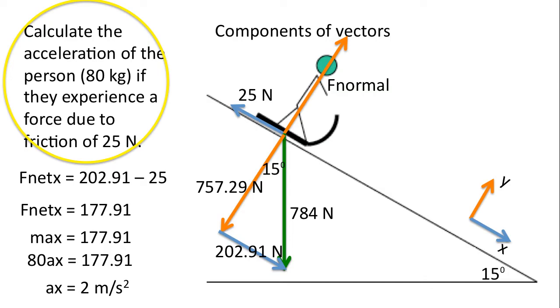With significant digits, it would only be 2, since 80 kilograms only has one significant digit. Please note in the diagram the length of the vectors. If we were to draw this to scale, if this is 202.91 newtons, this would be significantly smaller, at 25 newtons. You should adjust the length of these vectors to reflect the idea that, in this case, friction is significantly smaller than the force of gravity in the x direction.